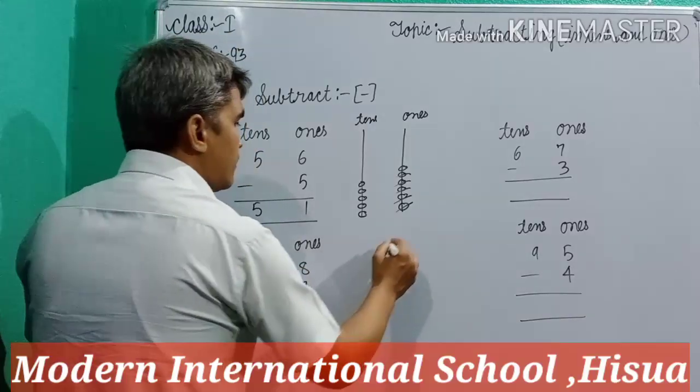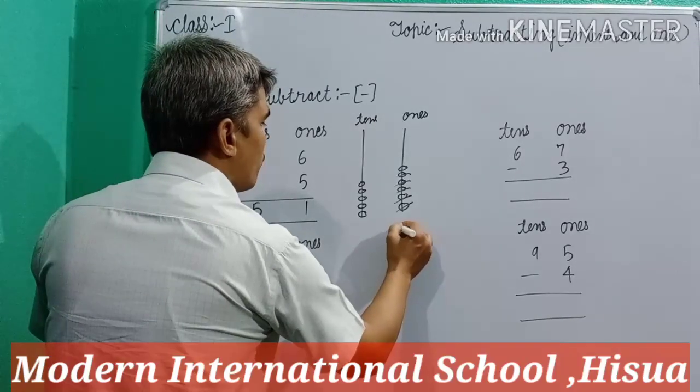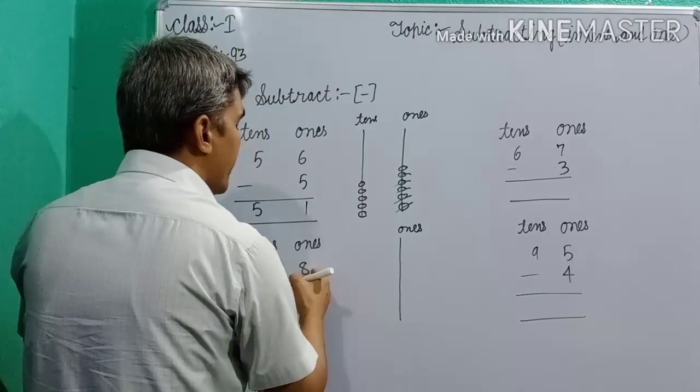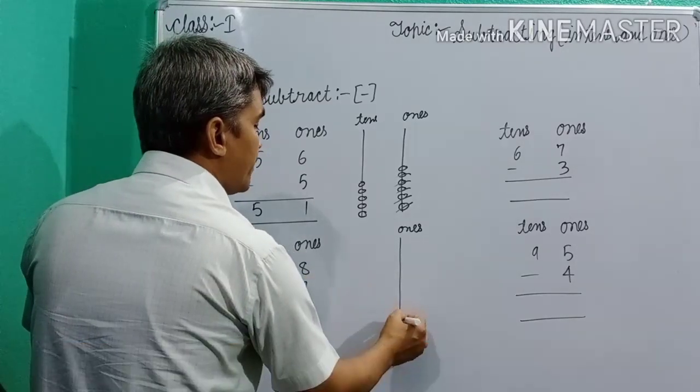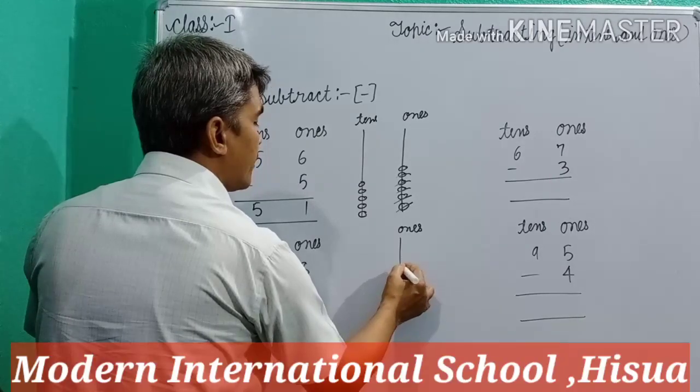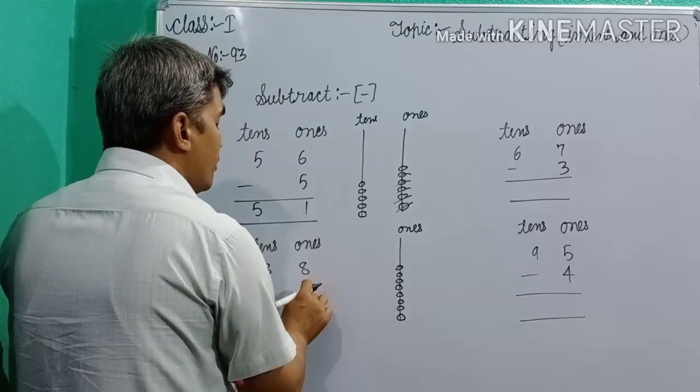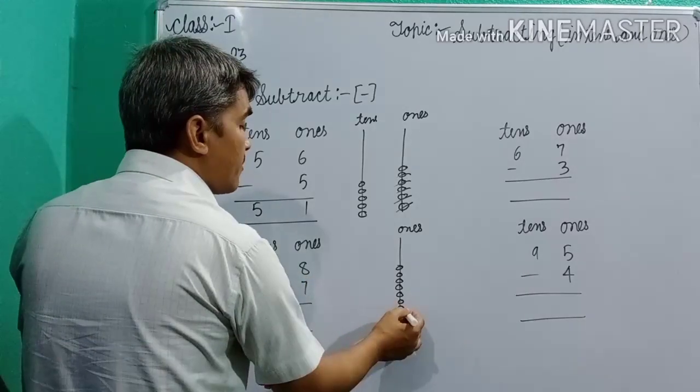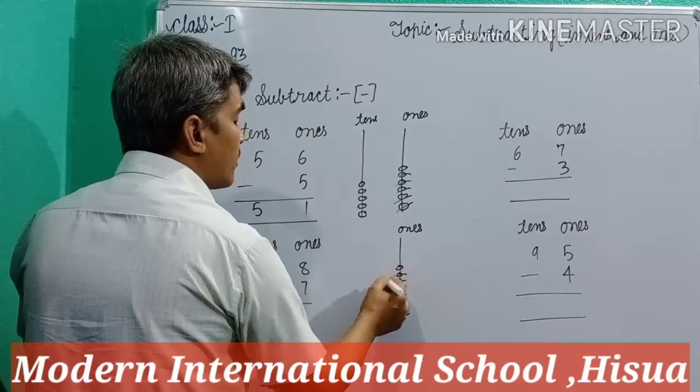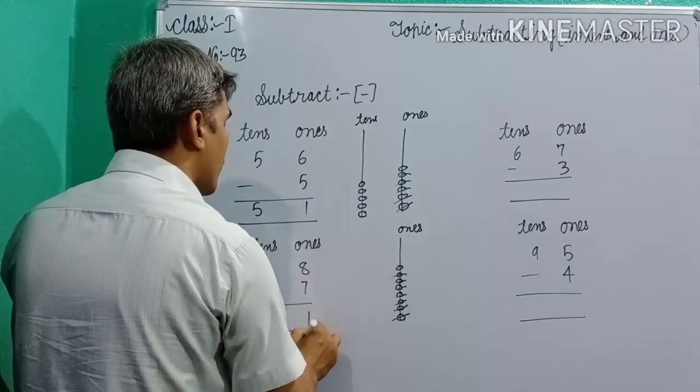Now, second question. Make a line for ones place digit. And here, in the above numbers 8, so make 8 bits: 1, 2, 3, 4, 5, 6, 7, 8. And in the below 7, so cancel 7 bits: 1, 2, 3, 4, 5, 6, 7. How many bits left? 1 bit left. So, here 1.